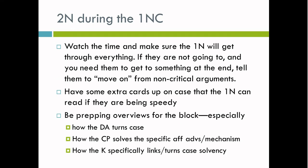What should the 2N be doing during the 1NC? You should be watching the time and making sure the 1N will get through everything. If they're not going to get through everything in the time allotted and you need them to get to something at the end, tell them to move on from non-critical arguments. So if I had 4 off-case and they're going really slow to the 4th off-case — not something I'm planning on extending in the block — and I really need them to get more time on case, I'll just say 'move on' right before they get to that last one.